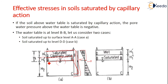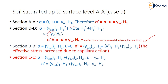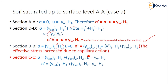At section BB (the water table level): sigma = gamma_sat1·h1, pore water pressure u = 0. Therefore sigma' = sigma − u = gamma_sat1·h1. The effective stress is again increased due to capillary action above the water table.